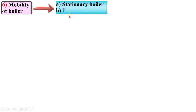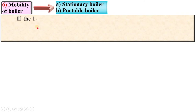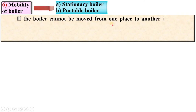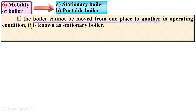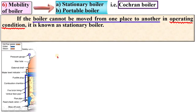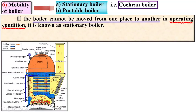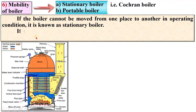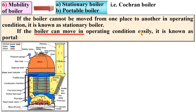According to the mobility of the boiler, boilers are classified as stationary and portable boilers. If the boiler cannot be moved from one place to another in operating condition, it is known as a stationary boiler. If the boiler can move in operating condition easily, it is known as a portable boiler.